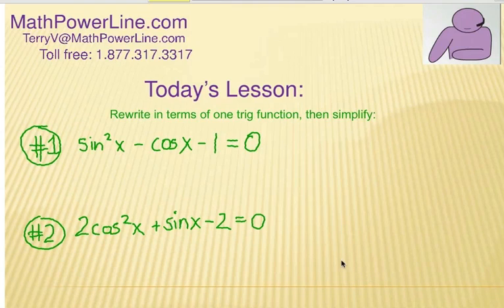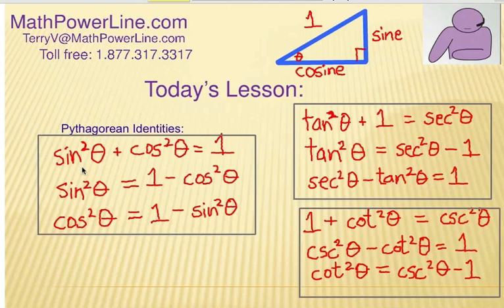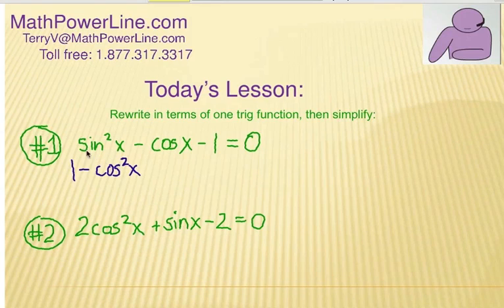Alright, number one, let's look for an opportunity to use a trig identity and I notice that it says sine squared x. Let's take a look at our trig identity sheet. I notice that I have sine squared theta, which is about the same thing, and we can replace that with one minus cosine squared x in the case of our problem. So, let's go ahead and throw that in there. We'll replace sine squared x as one minus cosine squared x and copy down the rest and let's see what happens.